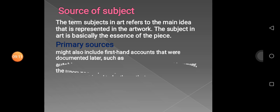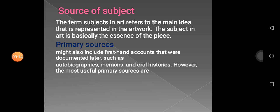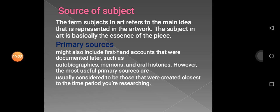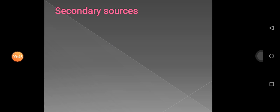First is the Primary Source. Primary sources might also include first-hand accounts documented later, such as autobiographies, memoirs, and oral histories. However, the most useful primary sources are usually considered to be those created closest to the time period you are researching. We also learned about primary and secondary sources in our Social Studies class.